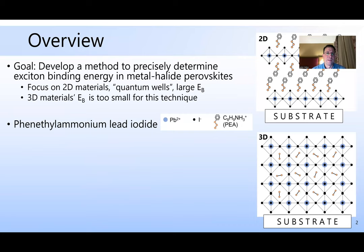As an overview, our goal here is to develop a method to precisely determine the exciton binding energy from metal halide perovskites. We're focusing on two-dimensional materials where the layers of the lead and halide atoms form octahedra quantum wells, and the binding energy is significantly larger than in three-dimensional materials.